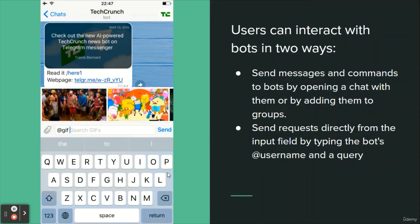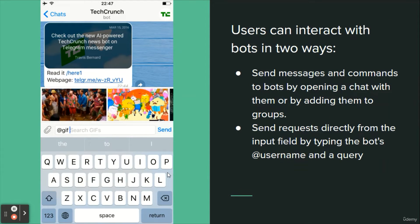How do bots work? At the core, Telegram bots are special accounts that do not require an additional phone number to set up. Users can interact with bots in two ways: send messages and comments to bots by opening a chat with them or by adding them to groups, or send requests directly from the input field by typing the bot's username and query. This allows sending content from inline bots directly into any chat, group, or channel.